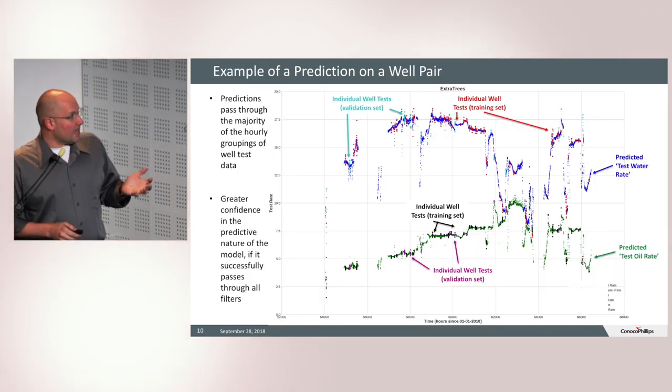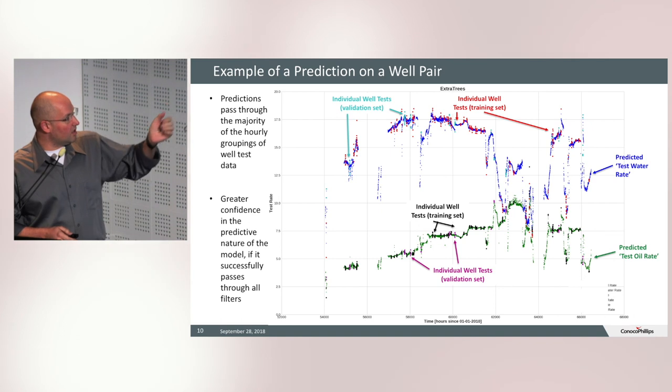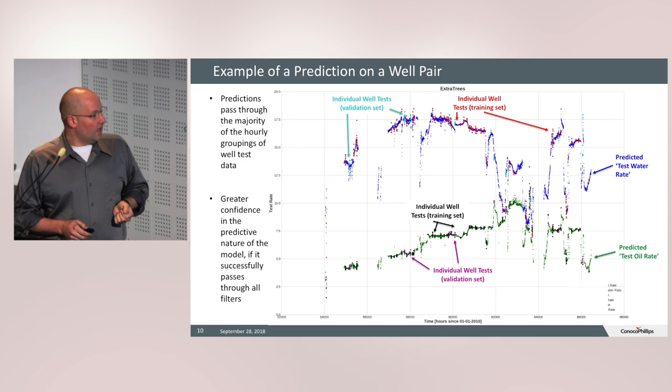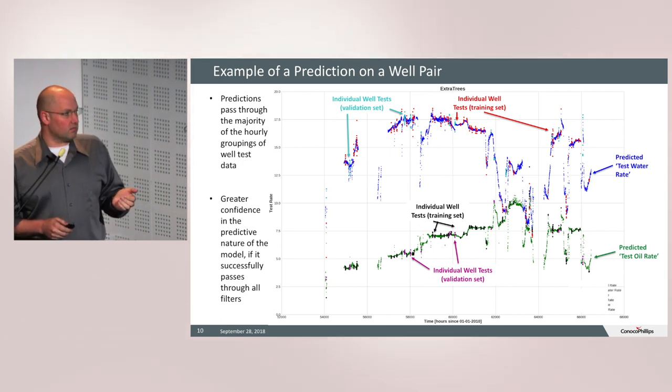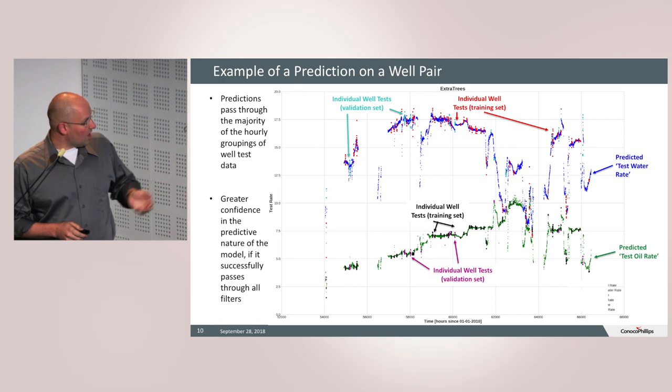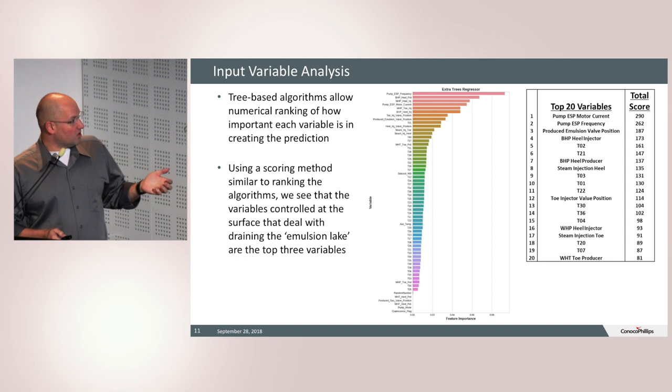And here's an example of the output in the time series of the predictions for both oil and water in the green and blue curves and the well test data that was used. In this case, we were randomly holding out the different hours in the well test. So that was our validation set. And the training data is there in the black points and also in the red points for the water. So it makes sense that a good model would then find its way to stab its way through all of the different well tests. So this turned out to be pretty good, and we were happy with this at first.